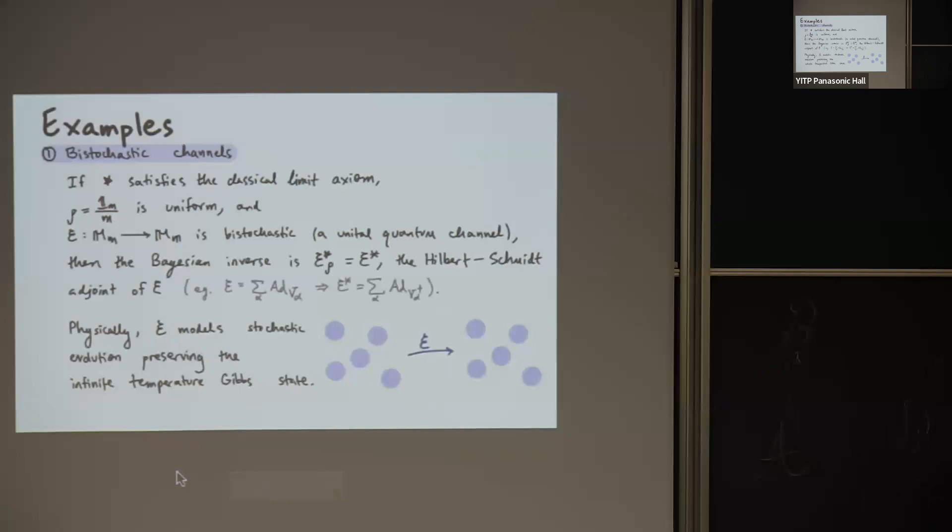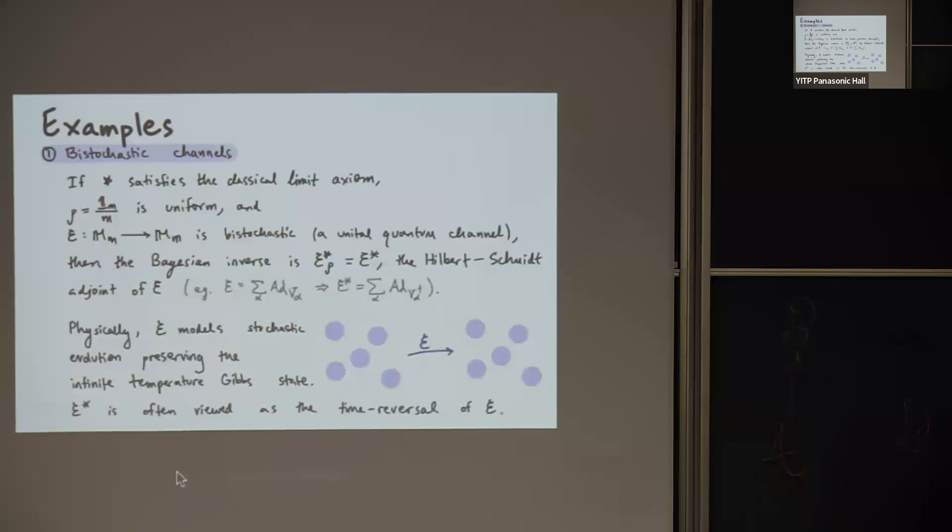Now, if you give me any state over time function, whichever one you come up with, and it satisfies the classical limit axiom, and then you try to go through the calculation and compute what is its Bayesian inverse, according to that definition, you'll find that it actually equals the Hilbert-Schmidt adjoint of the initial channel. Now, if you're familiar with CPTP maps, then the Hilbert-Schmidt dual is just, you have Krauss operators, and then you take their daggers. Or if you're still not familiar with that, everybody should be familiar with, if you have a unitary evolution and you take its dagger, then that describes the evolution going backwards in time. And this is part of the reason why this Hilbert-Schmidt adjoint is often viewed as a time reversal of E. But let me just emphasize that this is a very special case of when that applies.